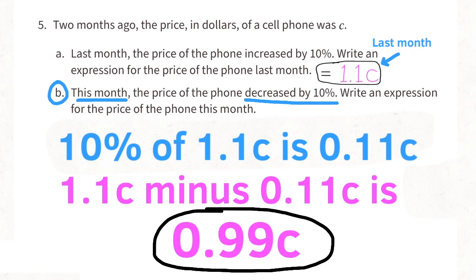And that is 0.99C. So the expression that represents the price of the phone this month is 0.99C.